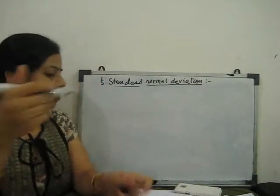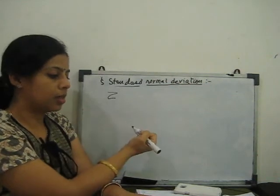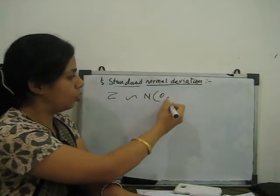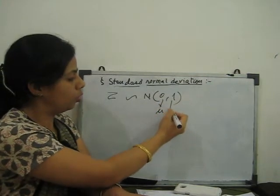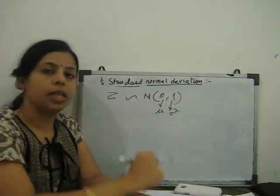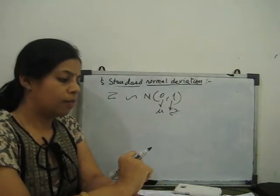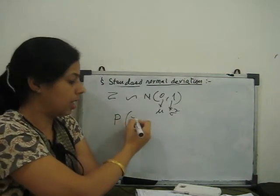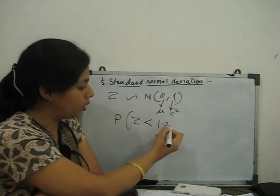If Z follows a standard normal distribution N(0,1) — meaning mean is 0 and variance is 1, so standard deviation is also 1 — we need to find the probability for Z greater than 1.23.